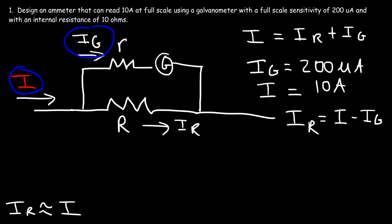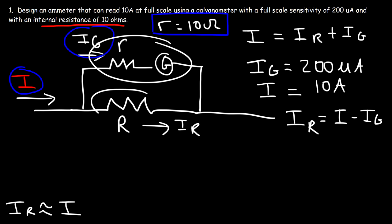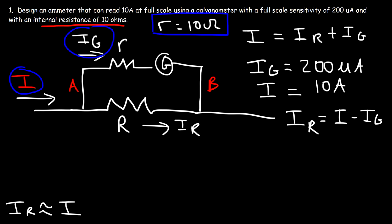We know the internal resistance lowercase r is 10 ohms, and we need to calculate the shunt resistor R. Since the galvanometer is in parallel with the shunt resistor, the voltage across the galvanometer between points A and B equals the voltage across the resistor. So we can write: voltage across the resistor equals voltage across the galvanometer.